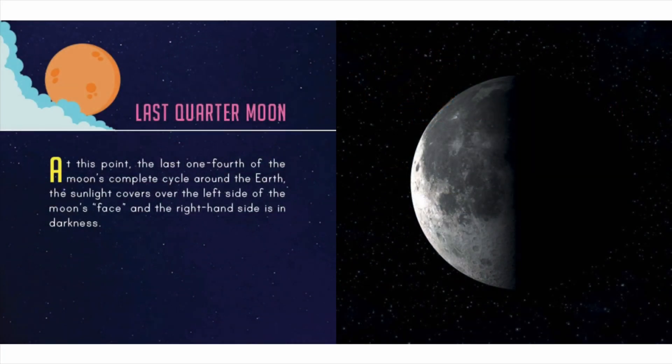The last quarter moon: at this point — the last one fourth of the moon's complete cycle around the earth — the sunlight covers over the left side of the moon's face and the right-hand side is in darkness.